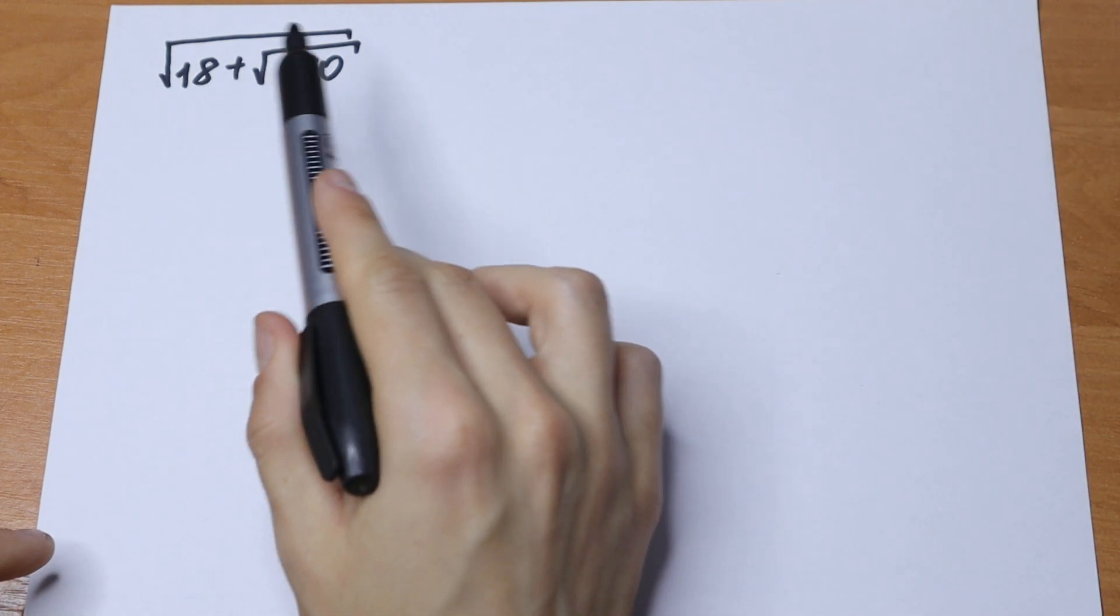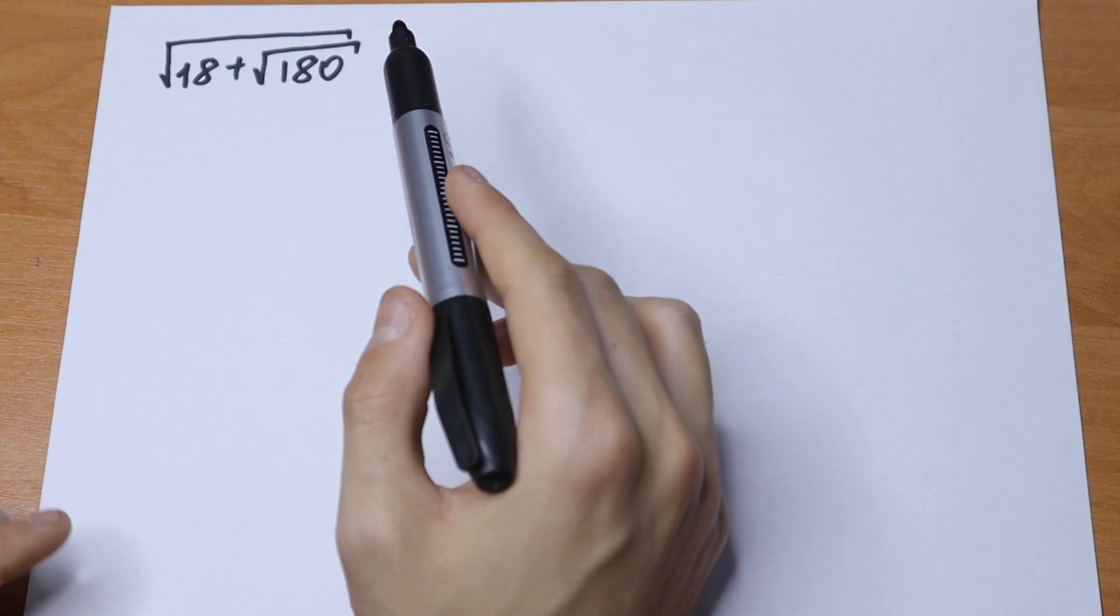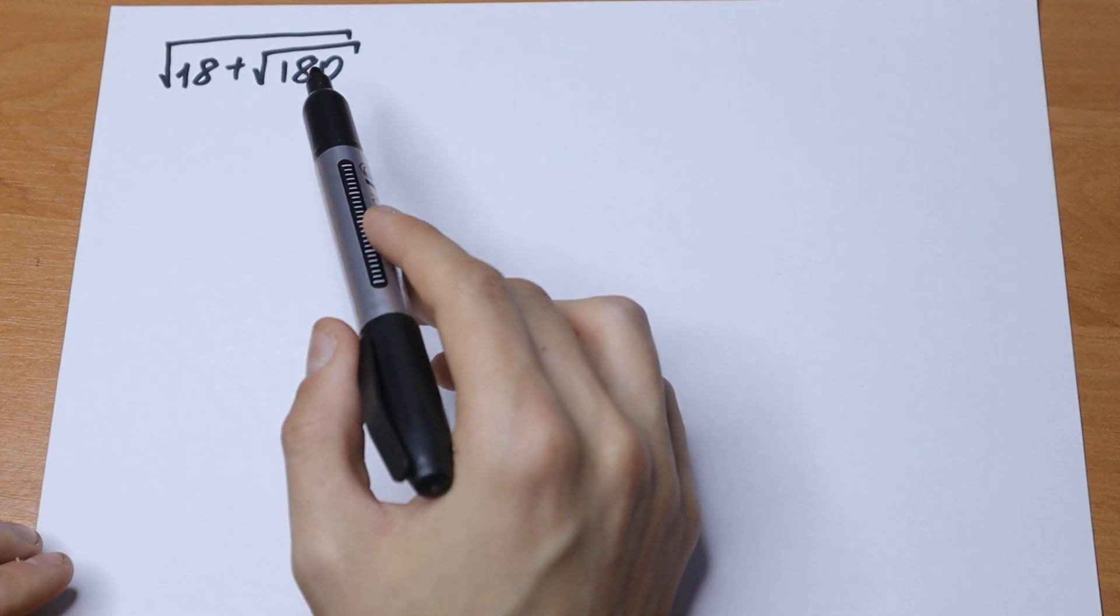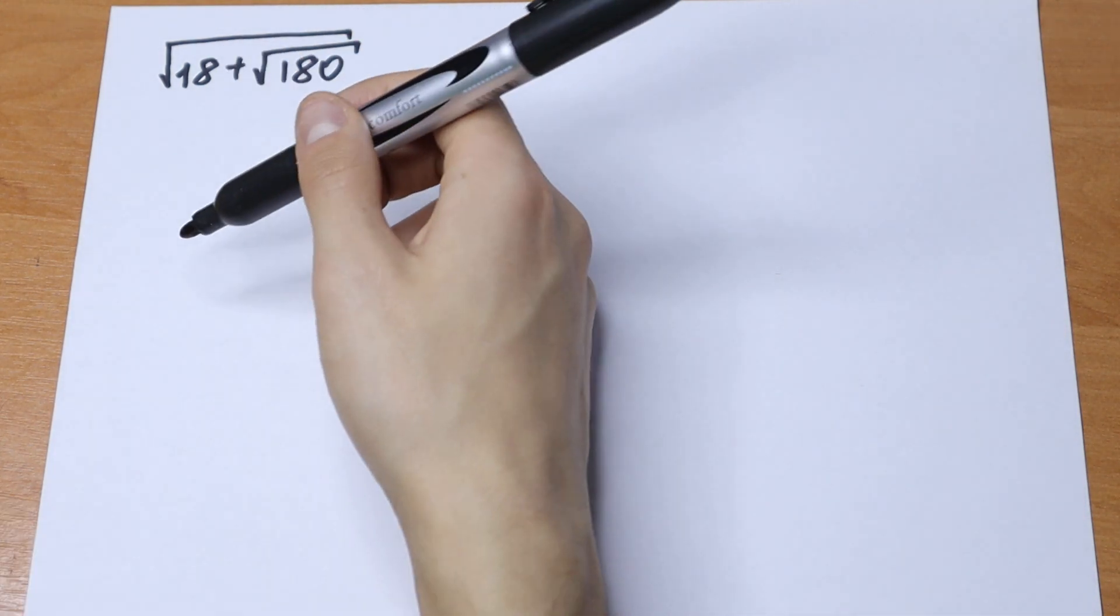The main idea to simplify these kinds of problems is to create, if possible, a formula inside the square root.